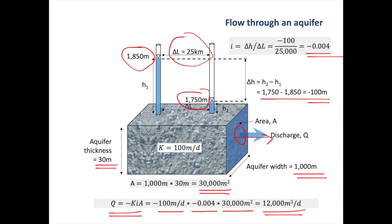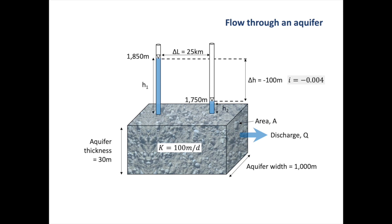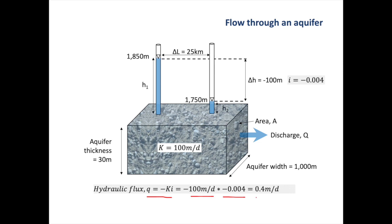That sounds like a lot of water, but how fast is the groundwater actually flowing? To calculate that, we can also use Darcy's law. The hydraulic flux q equals minus KI, so that is 100 meters per day times the hydraulic gradient of minus 0.004, and we end up with a hydraulic flux of 0.4 meters per day.